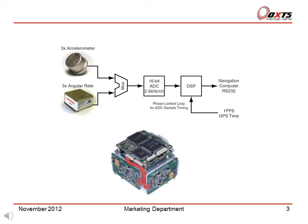The DSP runs on a phase lock loop that synchronises the ADC and the GPS time. This ensures that the RT samples at exactly 100 Hz and that the measurements from the RT are aligned to the GPS time.